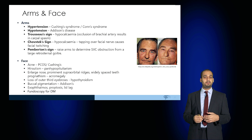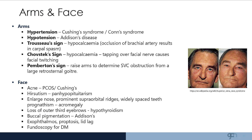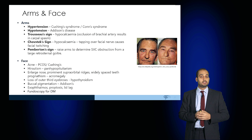Pemberton's sign is where the patient is asked to raise their arms, and if they have an underlying SVC obstruction — which can be as a result of a lung tumour or a large retrosternal goiter — this causes fullness of the face and flushing. You can see this gentleman: when he raises his arms the face suddenly fills, and this is due to SVC obstruction.